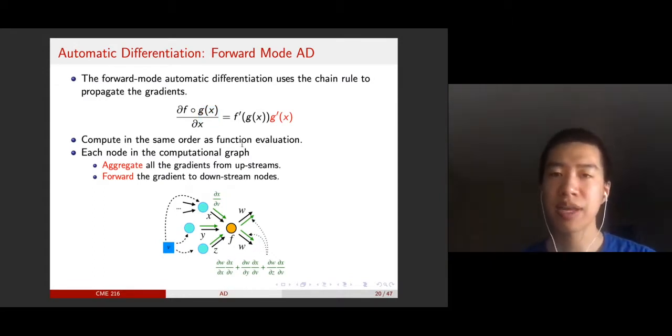The forward mode automatic differentiation uses the chain rule to propagate the gradients. When you evaluate this composition of functions, you evaluate g(x) first. In forward mode, when you evaluate the gradients, you evaluate g'(x) first. That means you compute the gradients in the same order as function evaluation.